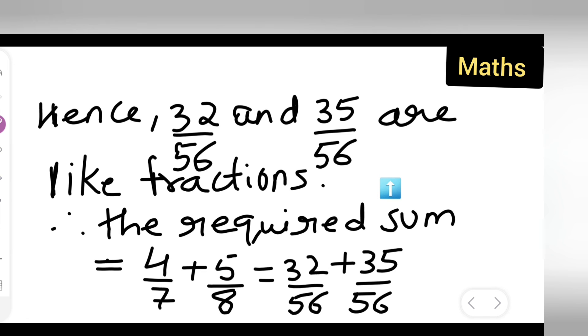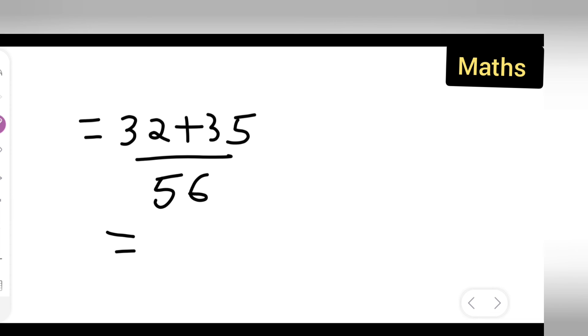32 plus 35 upon 56 is like fractions. The denominator is same now. So if you add this 2, what y'all are going to get? 35 plus 32 will give you 65, 66, 67. So you will get 67 upon, the answer is 67 upon 56.